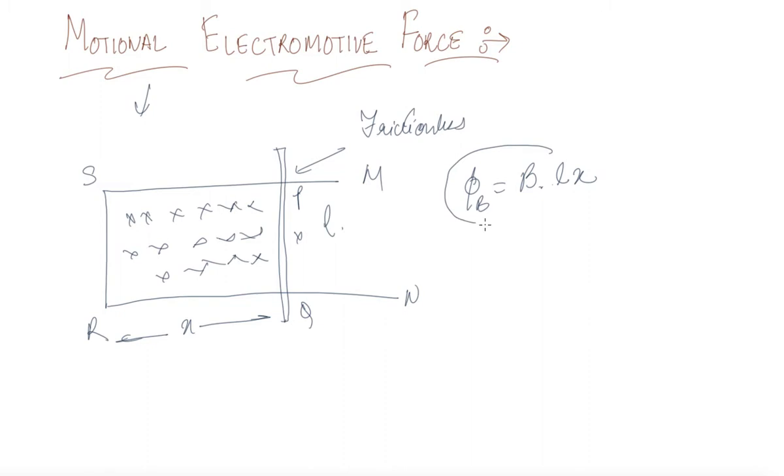Now what was EMF? EMF was change in magnetic flux. So if I take this rod X and if I change this X, that is I am changing the area. Now X is our variable length. So by Faraday's law, if I change the area there will be a change in flux, and with the change in flux with respect to time there should be induced an EMF in this conducting wire.